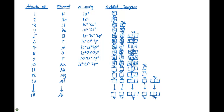Once we fill up those orbitals, every time we add an extra electron it goes into the orbital of the next highest energy. For sodium, we have 1s2, 2s2, 2p6 — the same electron configuration as neon — but then we need to put one more electron in there, and that's going to go in the 3s orbital, indicated by 3s1. So we completely fill the 1s, 2s, and 2p, and have one electron in the 3s.